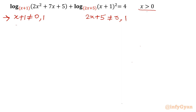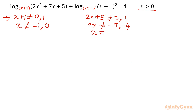You can write a few values from here. Like x+1 cannot equal 0 or 1 — take away 1 from both sides — so x cannot equal −1 and 0. From the second equation, take away 5 from both sides: x cannot equal −5/2 and −2. So these are the restrictions we consider.